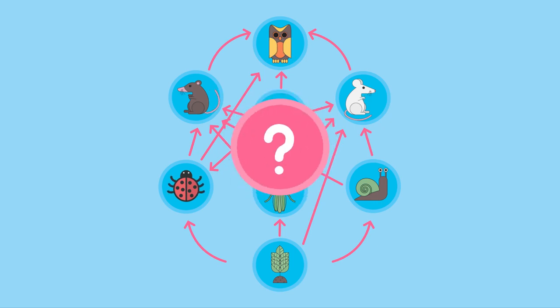So what happens if we remove one species from the food chain, perhaps if it went extinct? Well, to figure it out, we have to look at the whole food web.